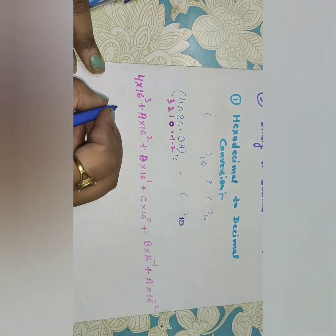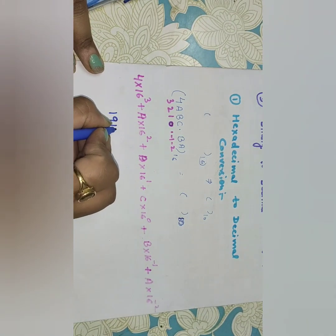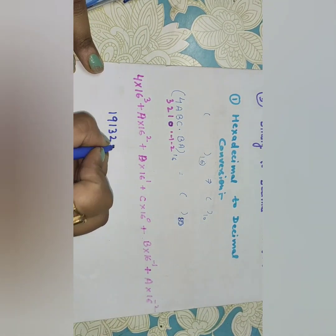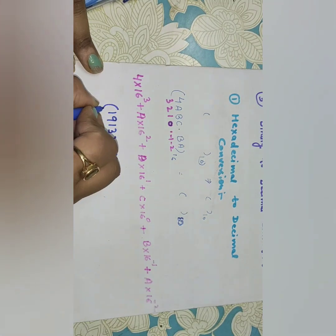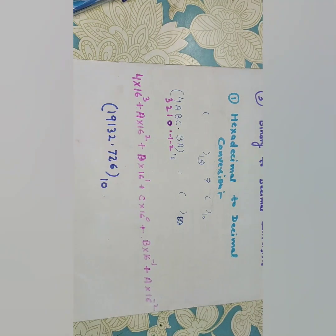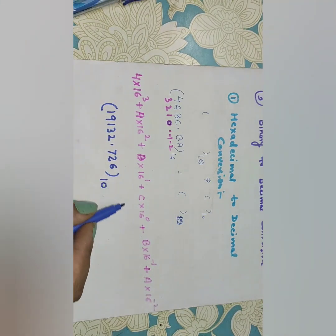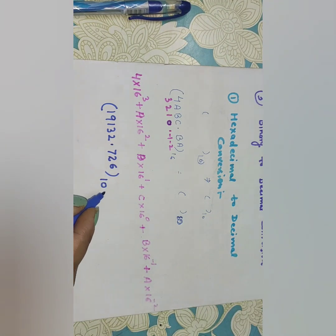When we solve this equation we get the answer 19132.726₁₀. This is your decimal value. I solved this equation using a calculator because it is a very large equation. You can also use a calculator.